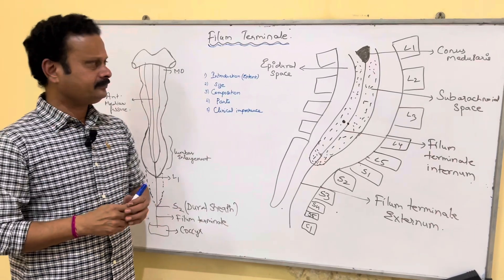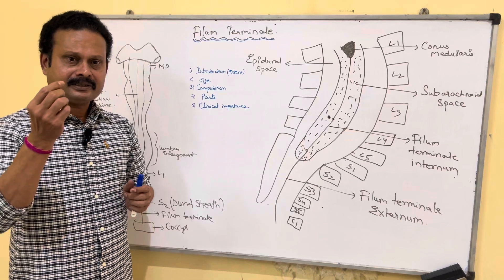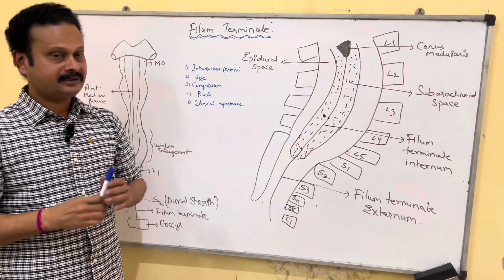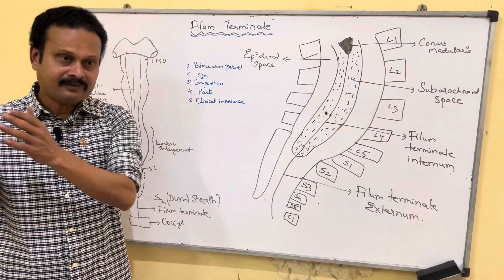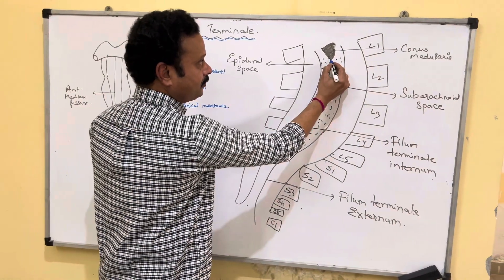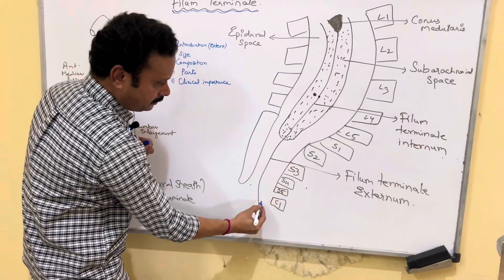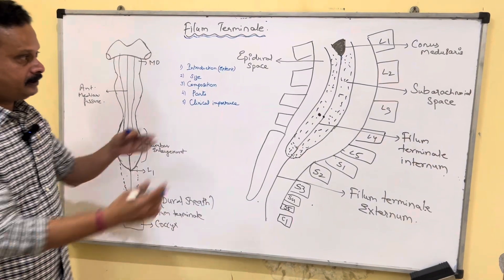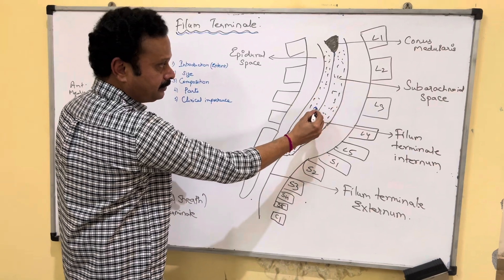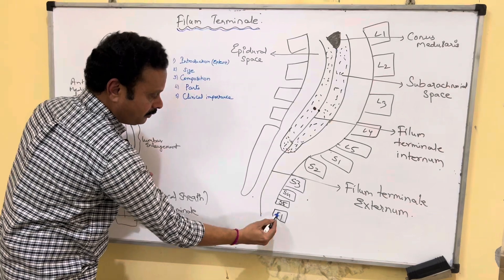It is a delicate, thin, thread-like, glistening white structure extending from the conus medullaris to the coccyx vertebra. It is a delicate, glistening white thread-like structure extending from the conus medullaris to the coccyx vertebra.